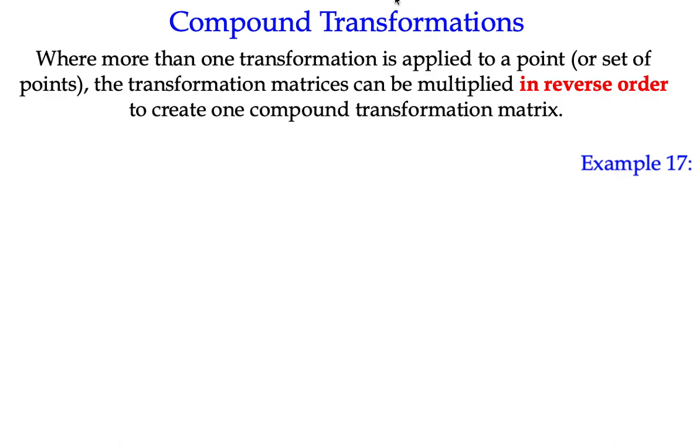And the important thing is that when we're applying more than one transformation, to get the compound transformation, we have to apply it in what I would call reverse order. In other words, we start with the last transformation and we multiply it by the next last, and then the last one to multiply is effectively the first transformation. So, let's see what that means in reality.